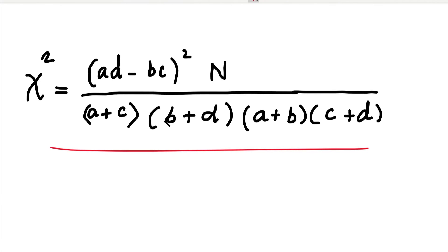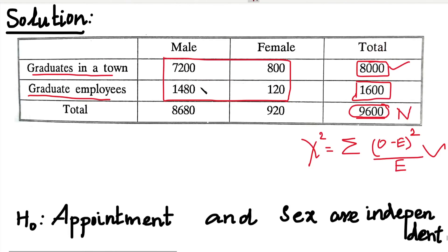In the formula, we have the Chi-square value using four values and also N. N is the grand total value, and A, B, C, D are the four cell values. The first value is A equals 7200, the second is B, the third is C equals 1480, and D equals 120.